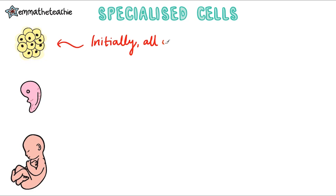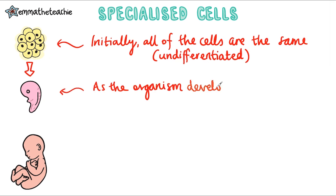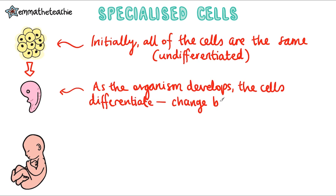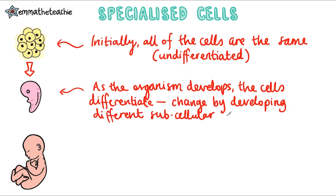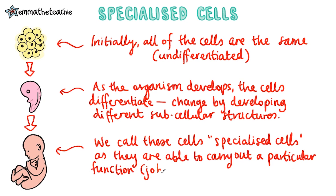When a new organism is growing, initially all of the cells are the same — they are undifferentiated. As the organism develops, the cells do differentiate. This means that they change by developing different subcellular structures. We call these cells that have developed subcellular structures specialized cells, as they are able to carry out a particular function, or that's just a fancy word for a job.